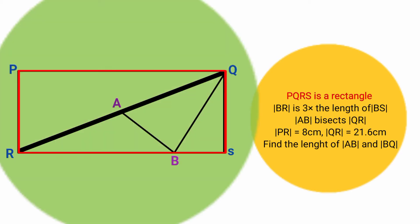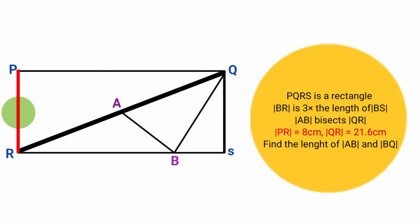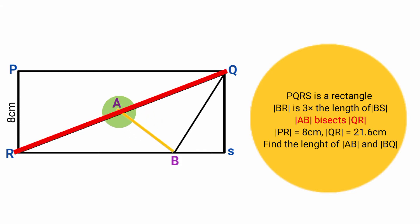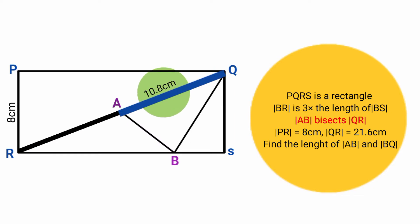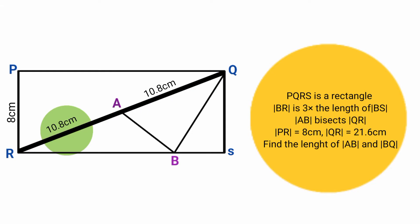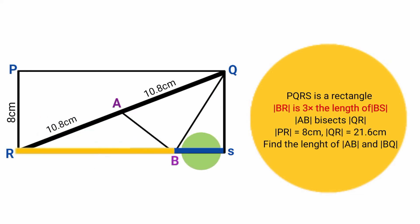PQRS is a rectangle. Line PR is 8cm and line QR is 21.6cm. Line AB bisects line QR, meaning it divides QR into 2 equal halves, so each half equals 21.6 divided by 2, which is 10.8cm. Line BR is 3 times the length of line BS. Labeling BS as X, line BR must equal 3X.